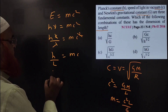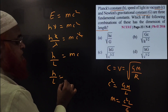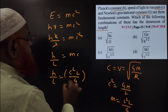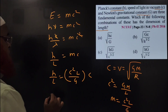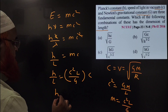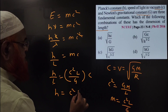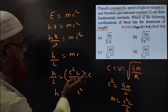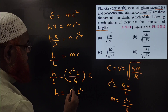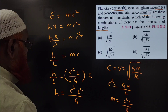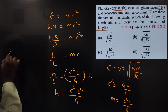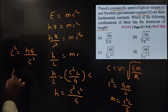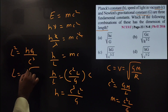Substituting M equals C²·L by G into H by L equals MC: H by L equals (C²·L by G)·C, so H by L equals C³·L by G. Rearranging, H equals C³·L² by G, which gives L² equals H·G by C³. Therefore L equals square root of H·G by C³.